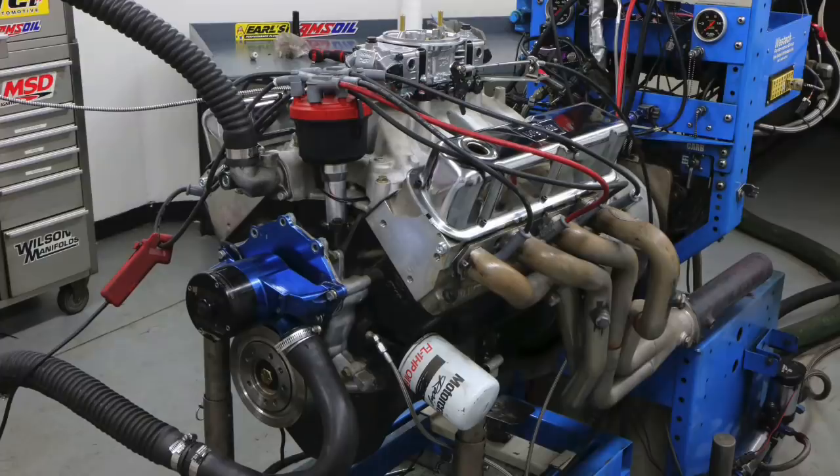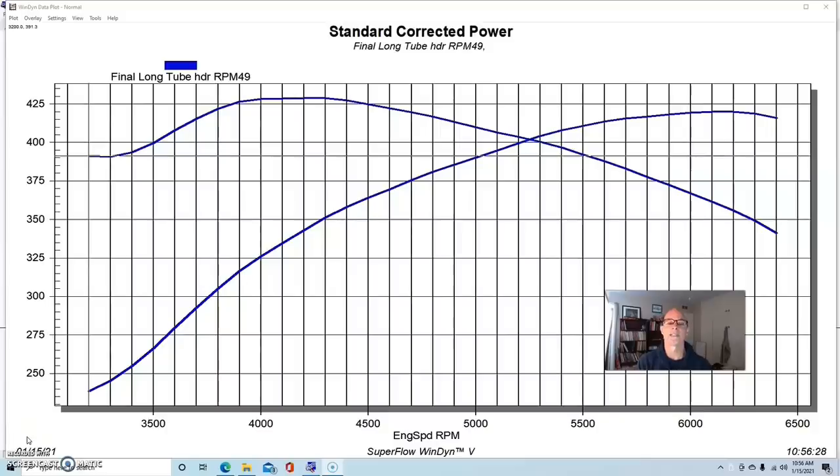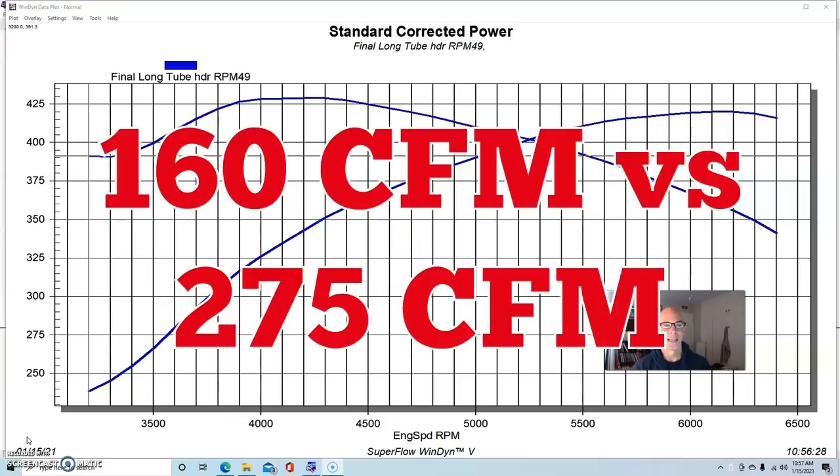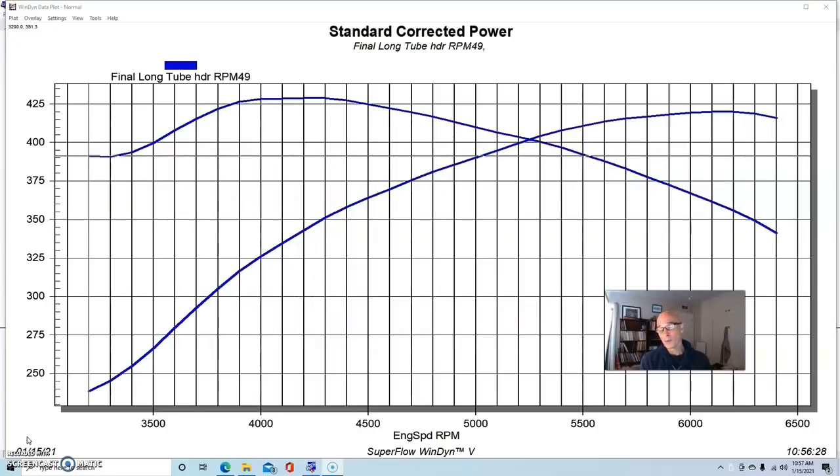To demonstrate what happens in our comparison between single plane and dual plane intakes, we ran them on two different motors as I described. We have a 351 Windsor and a 351 Cleveland. So we'll start out with the 351 Windsor. It's probably more common certainly in the United States, although I know my Australian guys love the Cleveland and for good reason. It's got a lot of cylinder head flow and can make a lot of power. Certainly a lot more than a factory Windsor can because the Windsor head's not nearly as good as a 4V Cleveland stuff. A stock Windsor head flows probably 155 or 160 CFM and a stock 4V Cleveland flows 275.